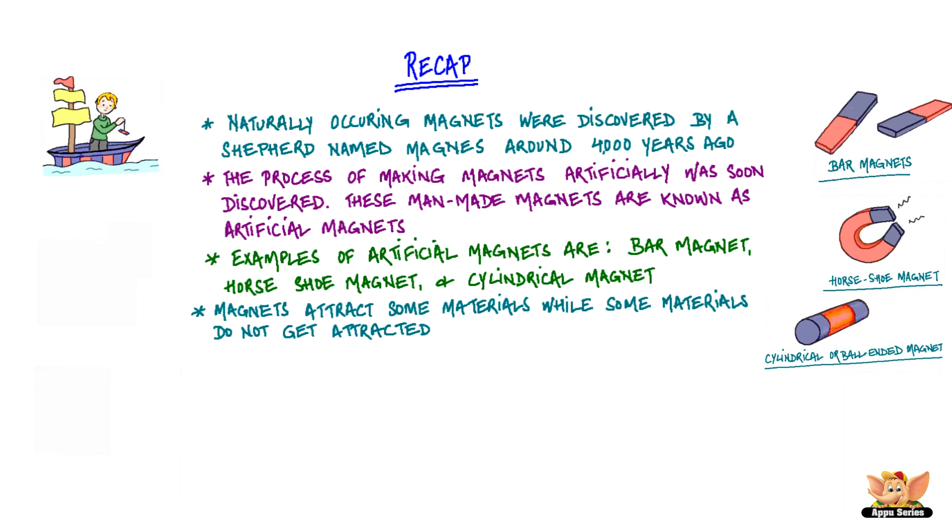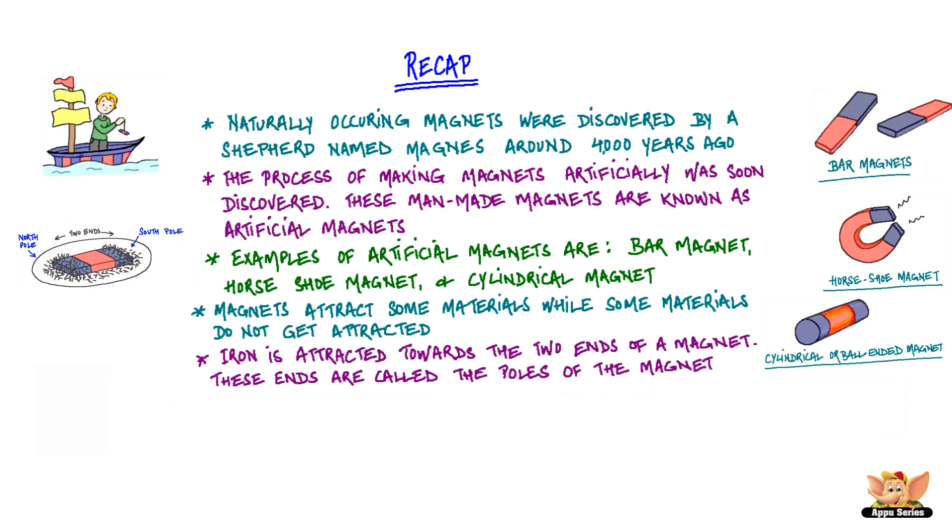Magnets attract some materials while some materials do not get attracted by magnets. Iron is attracted towards the two ends of a magnet. These ends are called the north and south poles of the magnet.